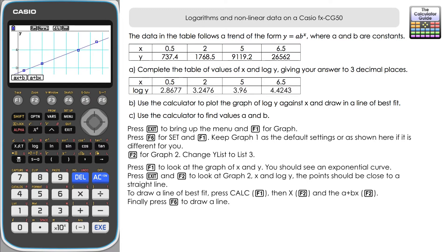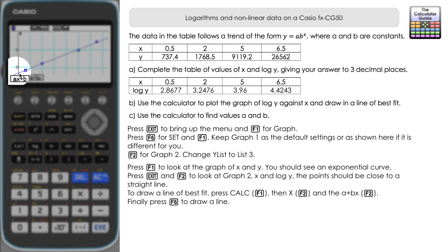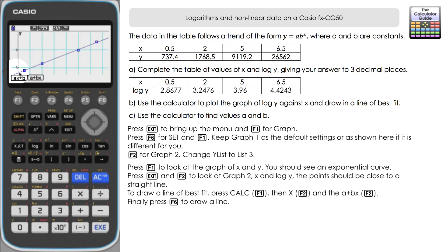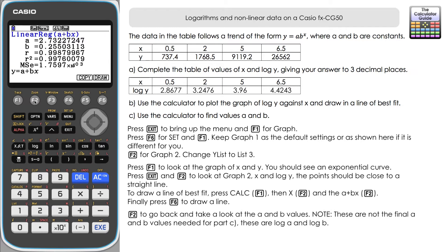Looking at the graph, the intercept is less than 3 — about 2.7 — and that's represented by the a value in our equation of the line. The gradient or steepness of the line is represented by the B value. Going back to look at those values: pressing F2, we can see a is about 2.7 and B our gradient is 0.255.